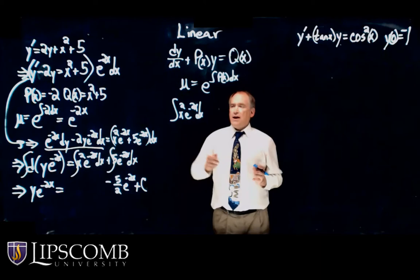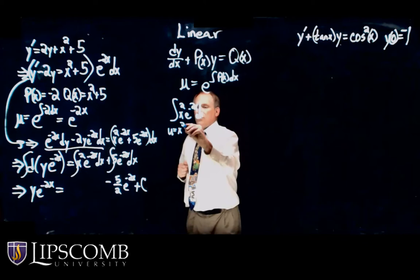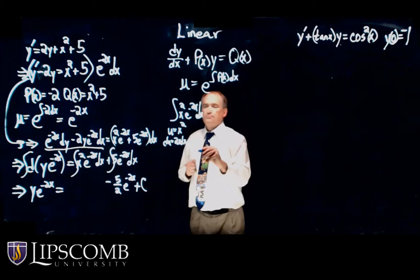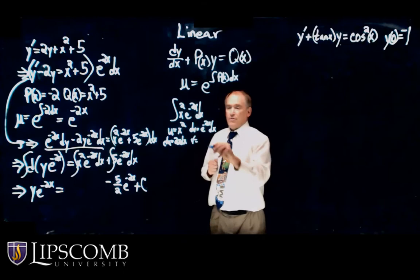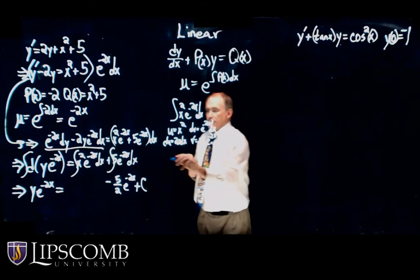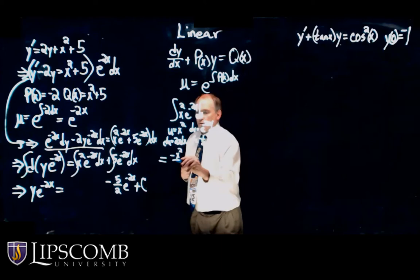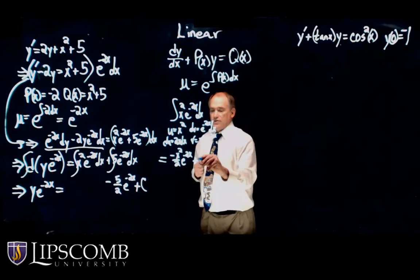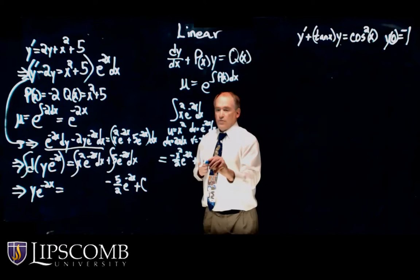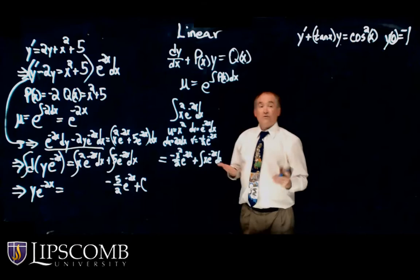Using LIATE: u = x squared, so du = 2x dx; dv = e to the minus 2x dx, so v = minus 1 half e to the minus 2x. This gives minus x squared over 2 times e to the minus 2x. Then the minus and minus makes a plus, the 2's cancel out, leaving the integral of x e to the minus 2x dx, which requires integration by parts again.